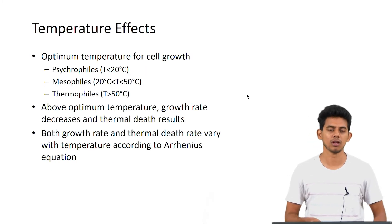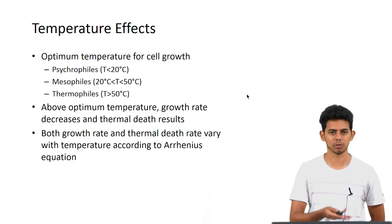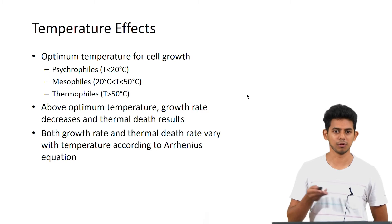Temperature effects. The optimum temperature required by the cells can vary based on the cell type. They are divided into three classes based on their required temperature: psychrophiles which require temperatures below 20 degrees Celsius, mesophiles which require a temperature range of 20 to 50 degrees Celsius, and thermophiles which require high temperature greater than 50 degrees Celsius.